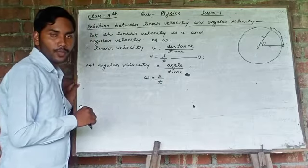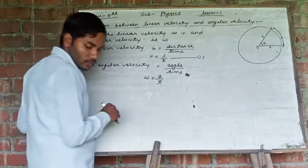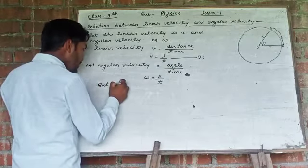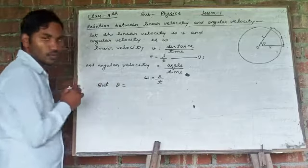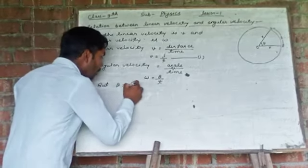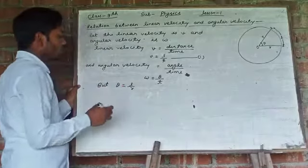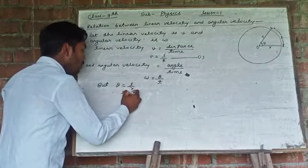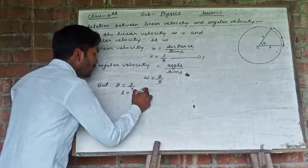What we know that θ upon T. We know that theta is equal to L upon R. So from here L is equal to R into theta.